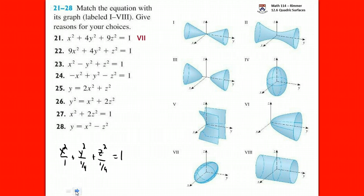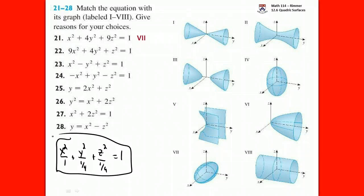With another ellipsoid in the set, we need to distinguish them. The biggest number in the denominator indicates the direction in which the shape is most elongated. Question 22 has the same structure but different numbers — now it's going to be elongated majorly in z. So that's another ellipsoid exaggerated in the z direction, which is Roman numeral IV.